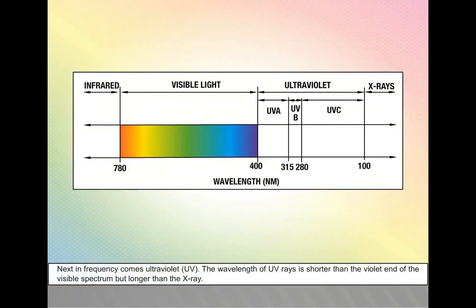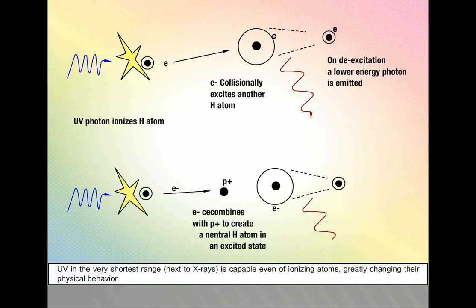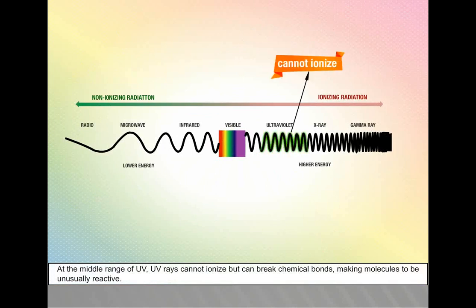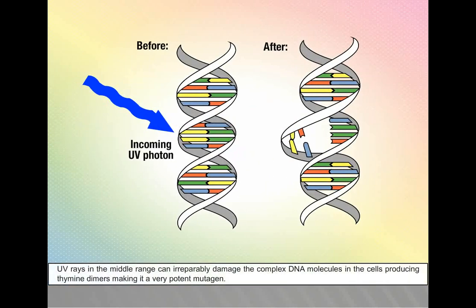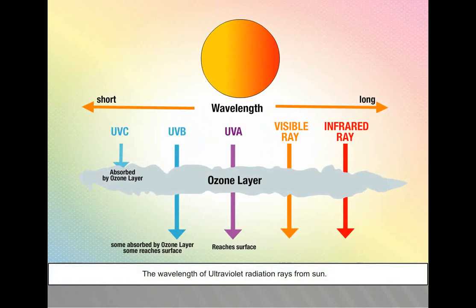Next in frequency comes ultraviolet UV. The wavelength of UV rays is shorter than the violet end of the visible spectrum but longer than X-ray. UV in the very shortest range next to X-rays is capable even of ionizing atoms, greatly changing their physical behavior. At the middle range of UV, UV rays cannot ionize but can break chemical bonds, making molecules unusually reactive. UV rays in the middle range can irreparably damage the complex DNA molecules in the cells, producing thymine dimers, making it a very potent mutagen. The wavelength of ultraviolet radiation rays from sun.